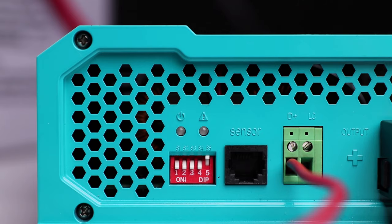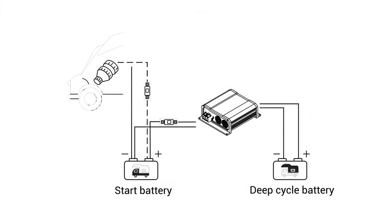Once the correct battery type is selected, the unit is now ready to start charging your deep cycle battery. Turn on the vehicle and when the D plus input receives a 12-volt signal, the unit will turn on and start charging the deep cycle battery from the starter battery.